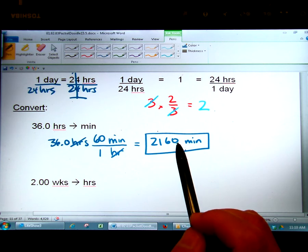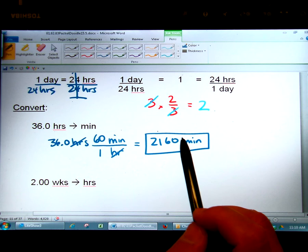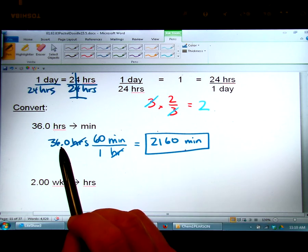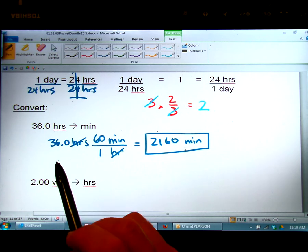Because remember this zero doesn't count. There's no decimal point. So ending zeros don't count in this number. There is a decimal in this number so ending zeros will count. And this also has three significant figures.